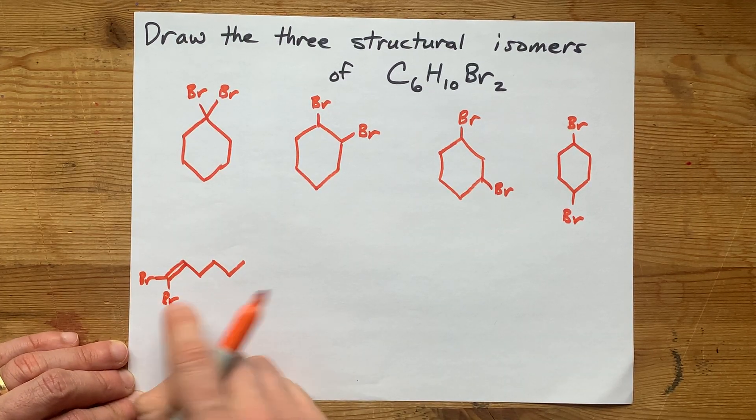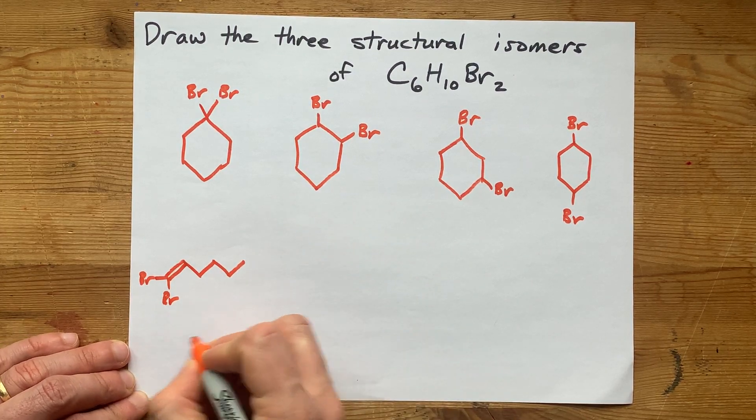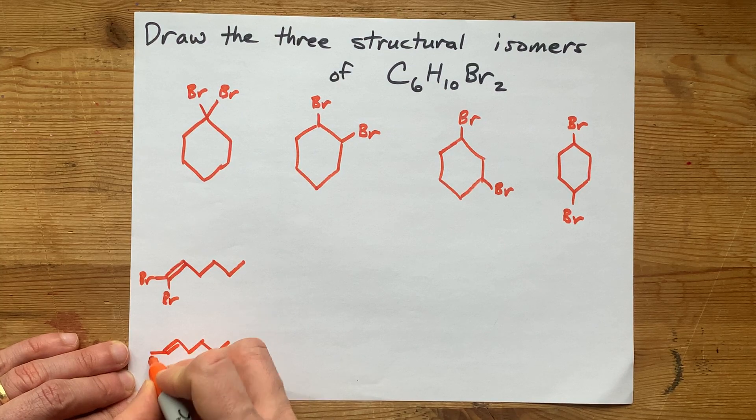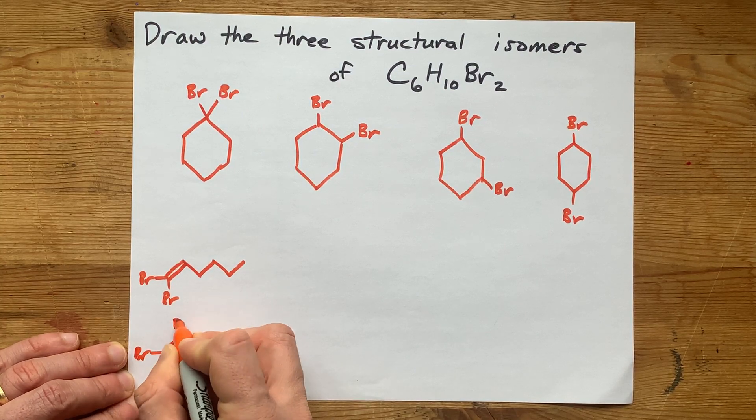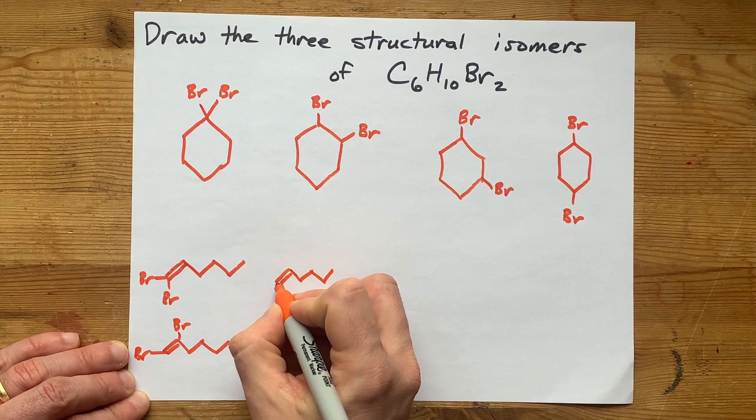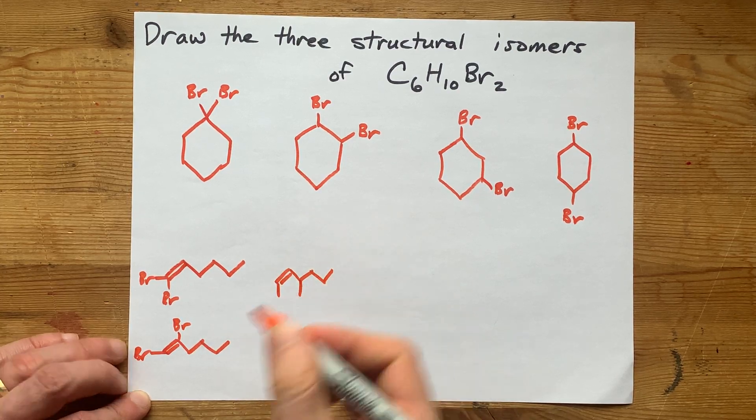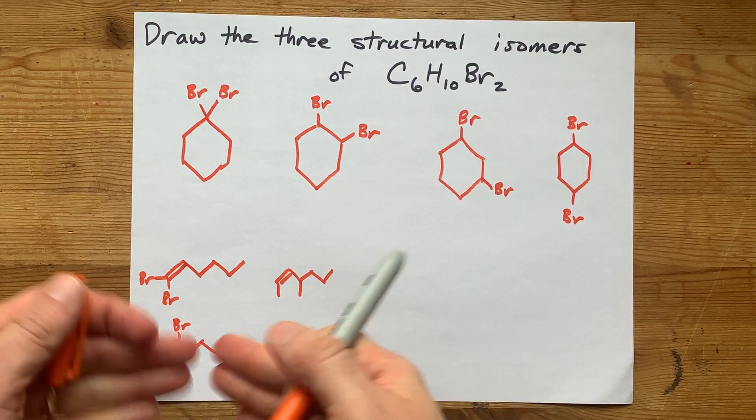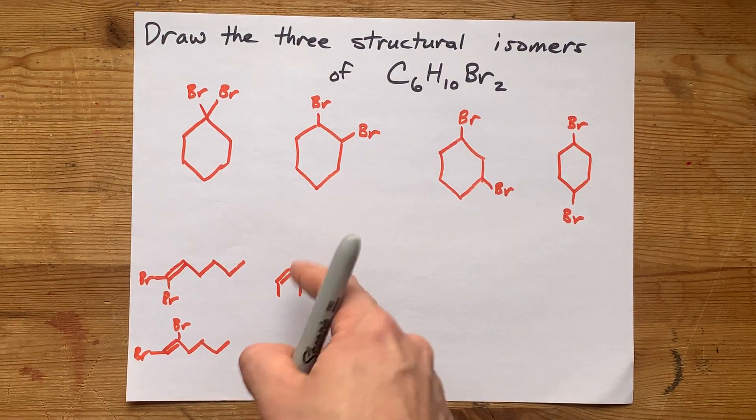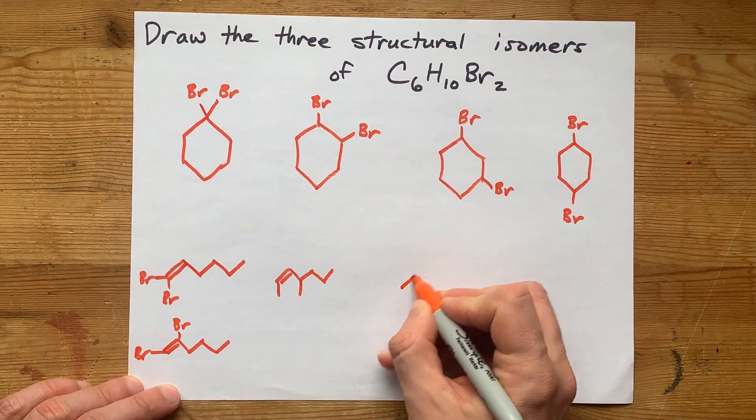But I could imagine a version of that where they are on carbons one and two. And I could imagine another one where they're on carbons one and three, et cetera, et cetera. And then I have to keep going through all this, but with the double bond in different places along the chain.